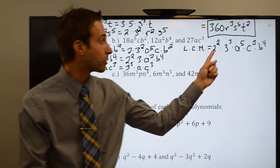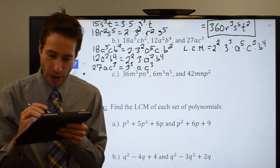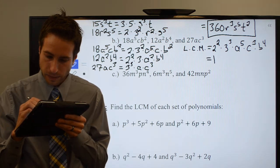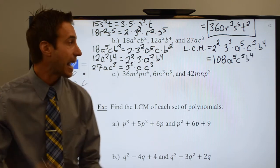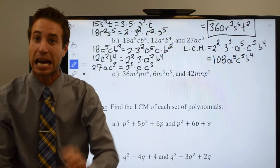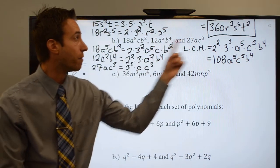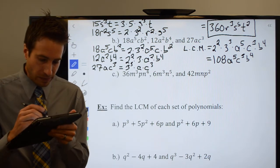Right. Multiply those out. 2², 3³. Quick calculator gives you 108. So my LCM is 108a⁵c³b⁴. That is the LCM, the least common multiple of those three monomials. One more here.